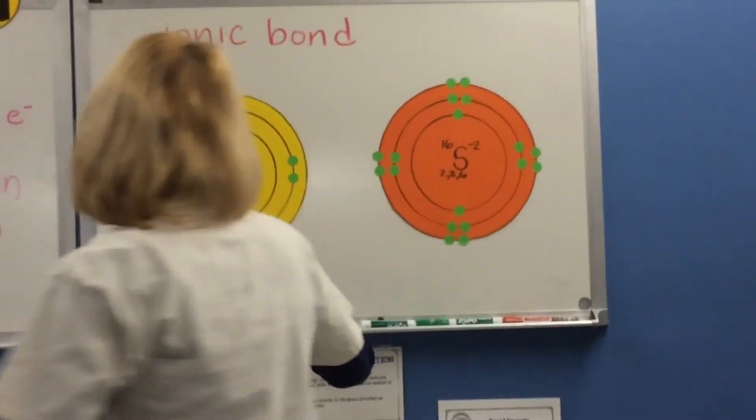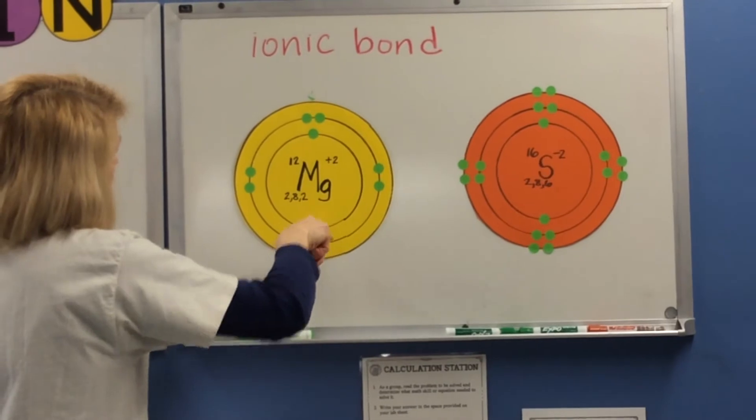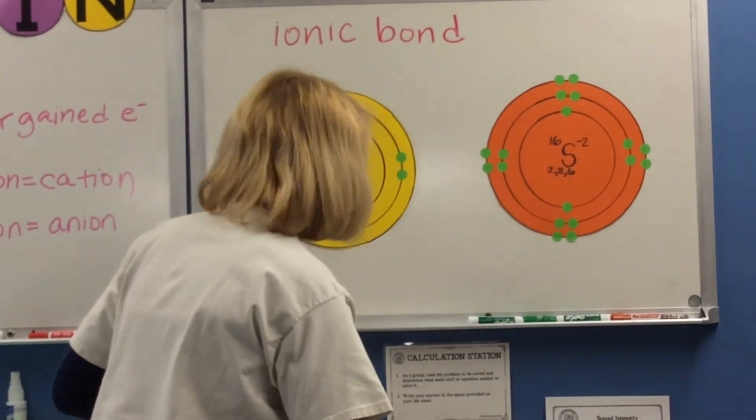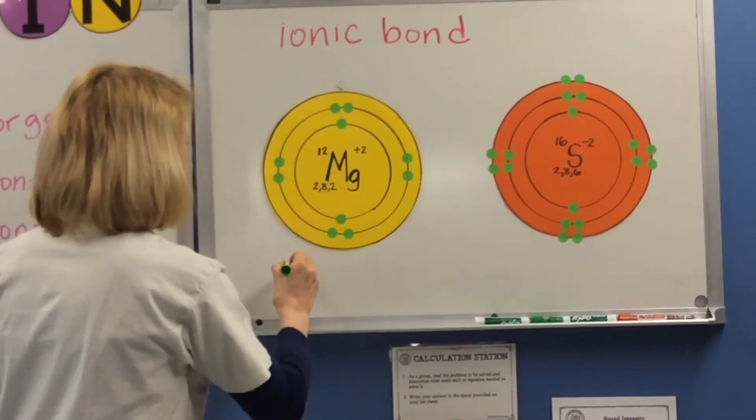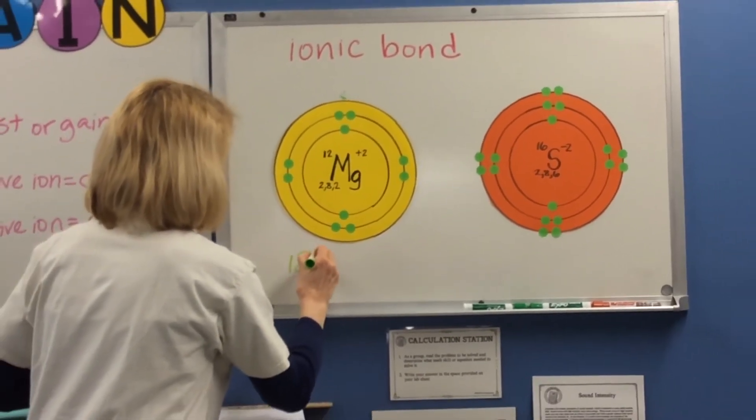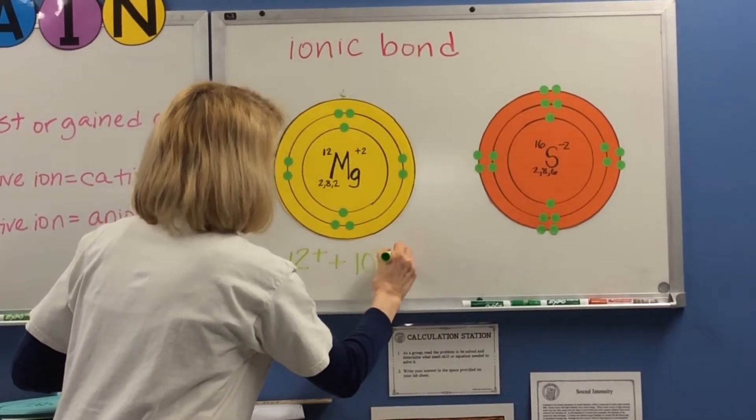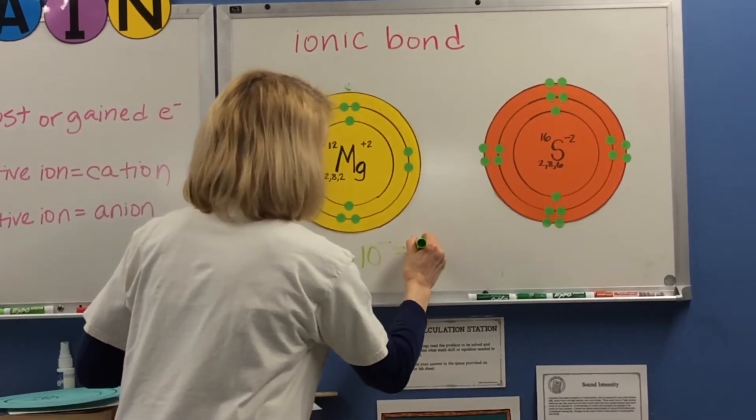Now magnesium has 10 electrons and 12 protons. So it's going to have an overall charge of plus 2.